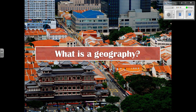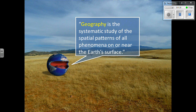We need to start with a definition of geography. The textbook definition is: geography is the systematic study of spatial patterns of all phenomena on or near the Earth's surface. I want you to pay special attention to the word 'spatial.' We're going to talk about spatial interactions, spatial distribution, or phenomena within spatial areas — that just means an area of space.